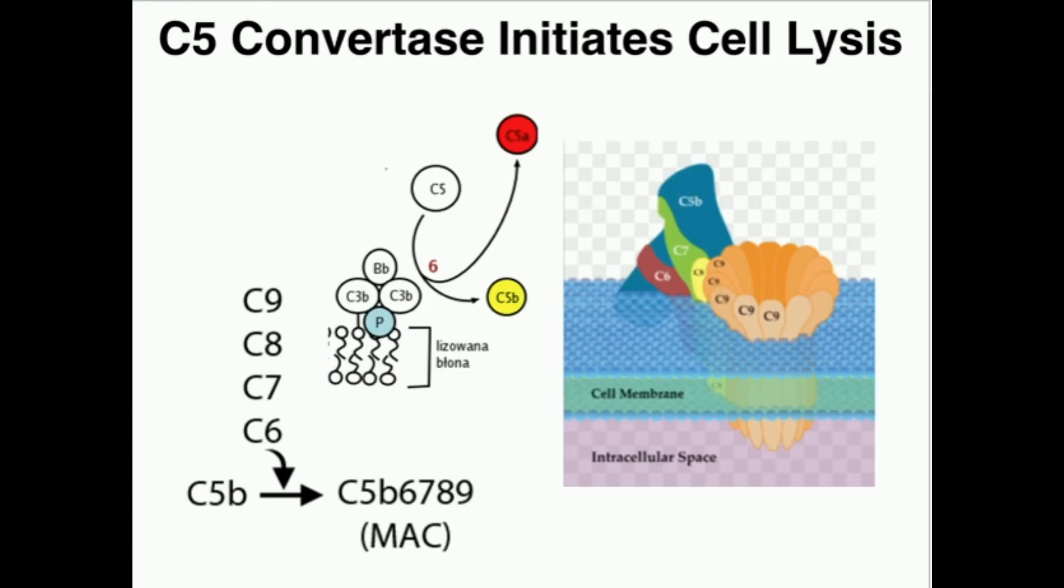Now, C5B, now is where we start, again, the common pathway between all pathways. C5B inserts itself into the membrane. It's going to attract a bunch of other proteins, C6, C7, C8, and a bunch of C9s. The C9s are going to orient themselves in such a way that, number one, they completely traverse through the membrane to the intracellular side, but they're also in an arrangement that's in the shape of a pore, which is going to allow things to move out and things out here to move in. We call this setup a membrane attack complex, MAC, membrane attack complex, because it's attacking the pathogen.